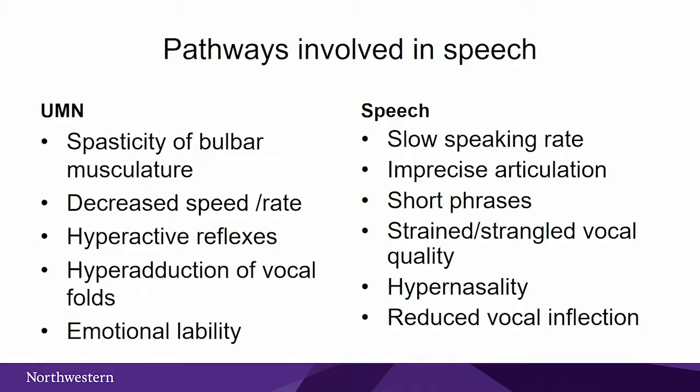With upper motor neuron involvement, we see spasticity of the bulbar musculature, slower speech rate, hyperactive reflexes, hyperadduction of the vocal folds, and emotional lability. The speech correlates include slow rate, imprecise articulation, shorter phrases, a strained or strangled vocal quality, hypernasality, and reduced inflection or intonation in the voice.